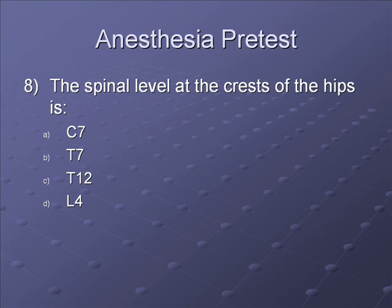Question 8: The spinal level at the crest of the hips is — A. C7, B. T7, C. T12, or D. L4. The correct answer is D, L4. Remember, you put your hands at the top of the crest of the patient's hips, and as you move towards the midline, you will find the spinous process of L4.